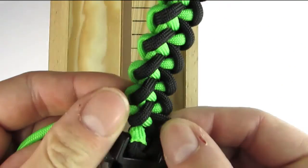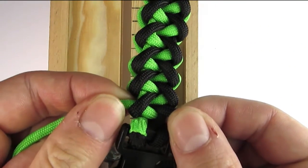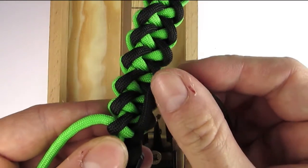To finish the bracelet we can simply snip off and melt the ends, or you can tuck them in on the bottom of our bracelet.